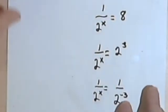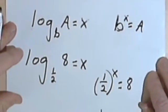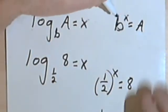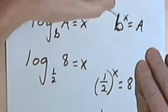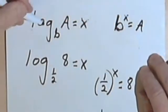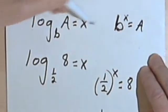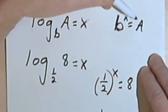Okay? So look, for every one of these, it was the same basic approach. We use this general concept of converting from logarithmic form to exponential form. We go from log base b of A equals x to b to the x equals A.